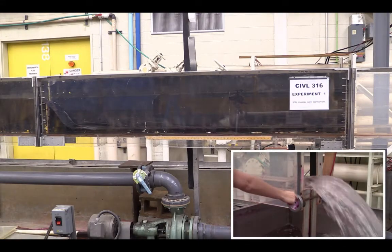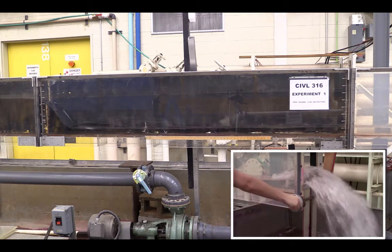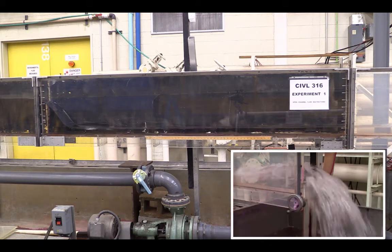Adjust the height of the downstream weir so that the hydraulic jump occurs between the ends of the wooden ruler.